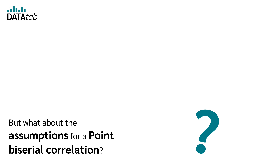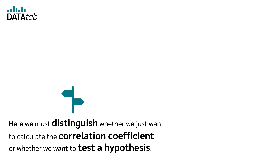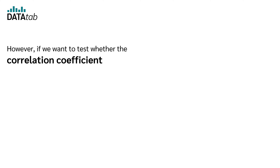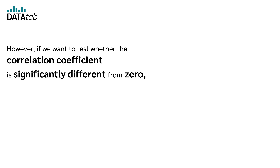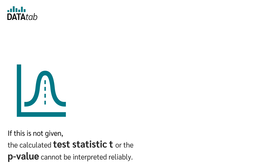But what about the assumptions for a point-biserial correlation? We must distinguish whether we just want to calculate a correlation coefficient or whether we want to test a hypothesis. To calculate a correlation coefficient, only one metric variable and one dichotomous variable must be present. However, if we want to test whether the correlation coefficient is significantly different from 0, the two variables must also be normally distributed. If this is not given, the calculated test statistic t or the p-value cannot be interpreted reliably.